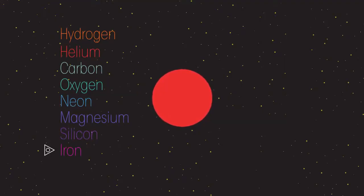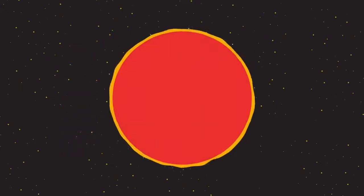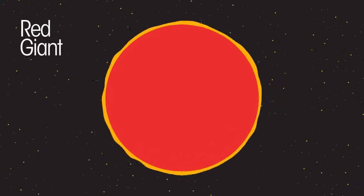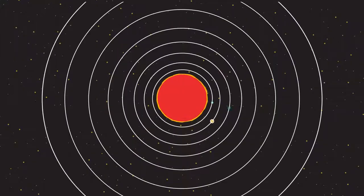To form elements heavier than iron requires an input of energy, which we'll explain a little later. The star now expands and becomes what is called a red giant. When our Sun becomes a red giant, it will expand to such a size as to engulf the three inner planets.